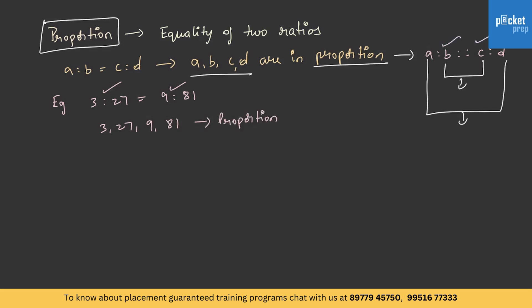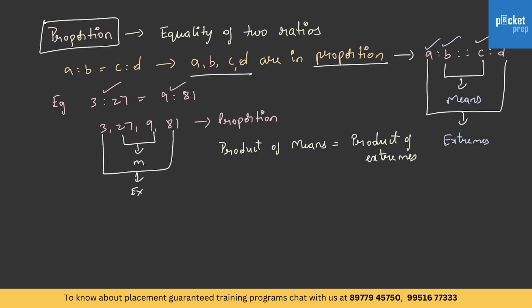Here B and C are known as means and A and D are known as extremes. In this example, 27 and 9 are the means and 3 and 81 are the extremes. So the formula of proportion is: product of means is equal to product of extremes, that is B into C is equal to A into D.